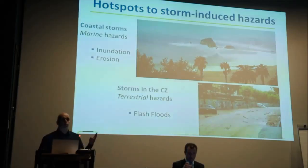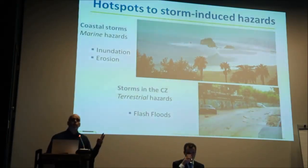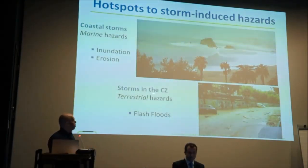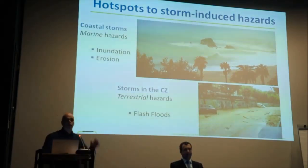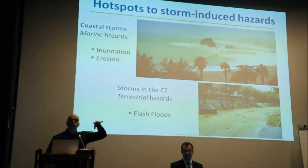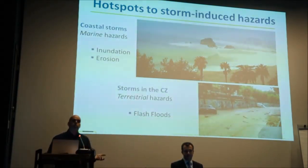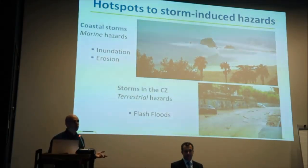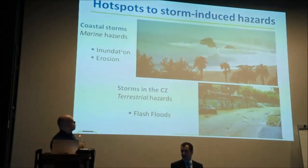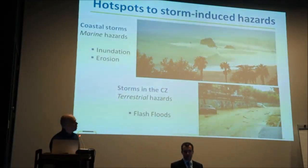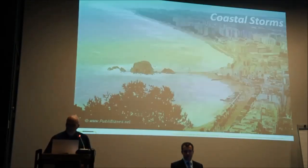Coastal storms essentially produce two main hazards: inundation and erosion. When we talk about a storm in the coast, we are referring to the storm being in the hinterland and producing a specific hazard typical for the Mediterranean coast — the flash flood. So we are trying to identify hotspots related to these three hazards: coastal storm inundation, erosion, and flash floods.